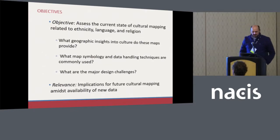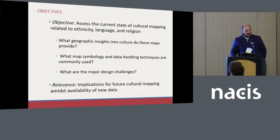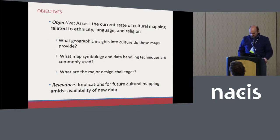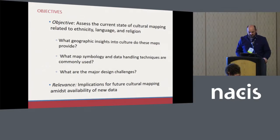My objective here is to assess the overall state of cultural mapping — maps that depict ethnicity, language, or religion. I have three main goals: first, the geographic insights these maps provide — what do they tell us? Second, what symbology and data handling techniques are used? And third, what are the major design challenges? As data sets become increasingly more available, I think there's going to be a continued need for these types of maps.